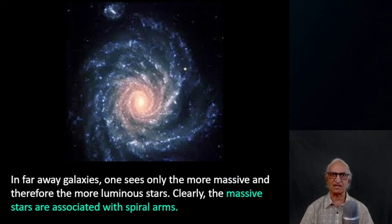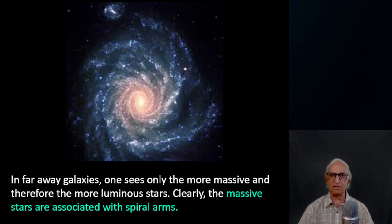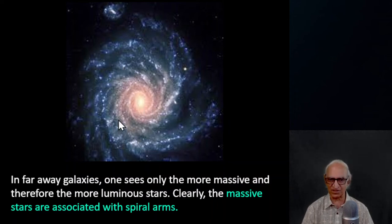This implies that the low-mass stars seen in this long-exposure picture are not necessarily associated with the spiral arms. On the other hand, if you look at very distant galaxies, you see mainly the bright, luminous, massive stars. The luminosity of a star is proportional roughly to the cube of the mass. Therefore you see only the more massive and luminous stars, and clearly the massive stars are associated with spiral arms — in fact, they define the spiral structures.